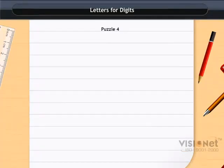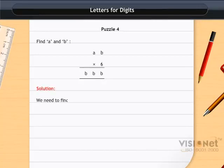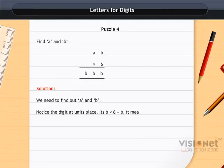Look at puzzle 4. Find a and b. We need to find out a and b. Notice the digits at units place. It's b×6=b. It means b is equal to 2, 4, 6, 8, or 0.